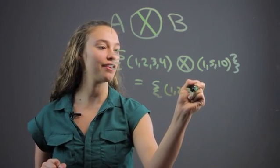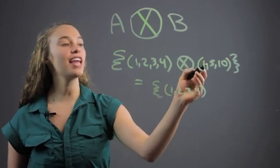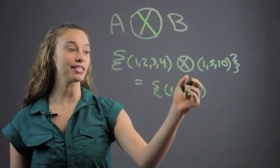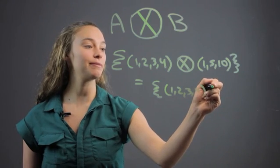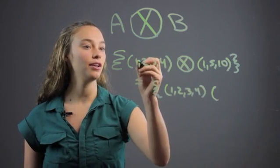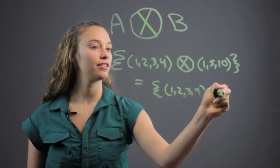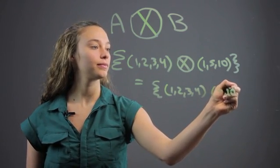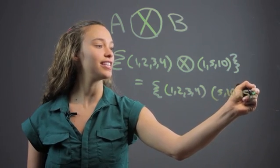The next one, we're going to multiply 5 by all these numbers here. So that's going to be (5, 10, 15, 20).